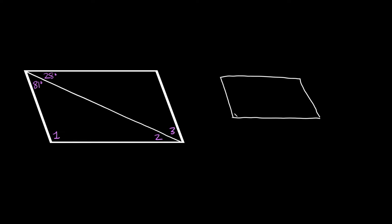Here's the next example. We have our parallelogram with a line cut through the center, splitting it into two different triangles. One thing to remember is that consecutive angles are supplementary — this angle and this angle, when you add them up, should equal 180 degrees. It doesn't matter if a line is drawn through the parallelogram; the whole angle plus the whole angle is still equal to 180 degrees.